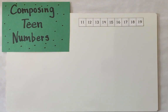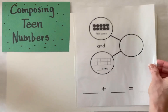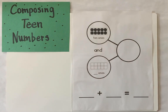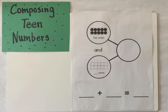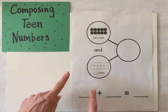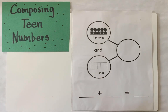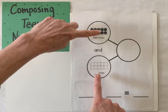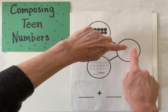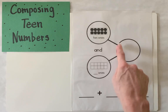Now let's do it a different way. We're going to use a tool from our addition and subtraction unit called a number bond. When we use a number bond, it's a form of a part-part-whole mat. These would be our parts, and then we join them together to create our whole.